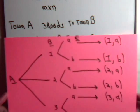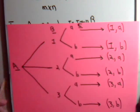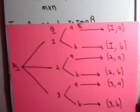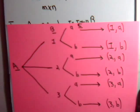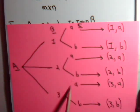So here it would be, here's town A, with three roads leading to town B, and then here is town C. And from town B, there are two roads that lead to town C. Illustrated here, here, and here.